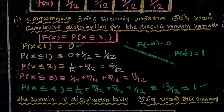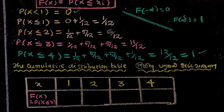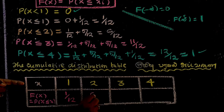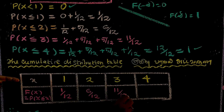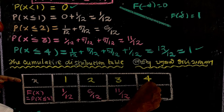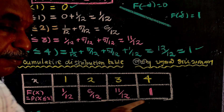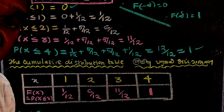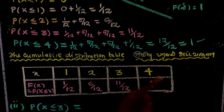Summarizing the CDF table: x=1 gives F(x)=1/12, x=2 gives F(x)=6/12, x=3 gives F(x)=11/12, and x=4 gives F(x)=12/12, which equals 1. The cumulative distribution function F(x) is a non-decreasing function, which is why F(-∞) equals 0 and F(+∞) equals 1.